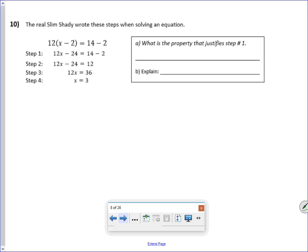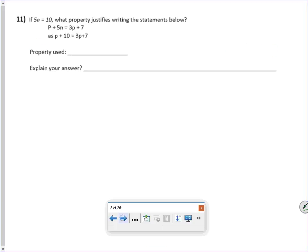So match those and make flashcards or whatever you need to do to learn your properties. All right. The real Slim Shady wrote these steps. What justifies step A? Well, he distributed the 12. So that's the distributive property.